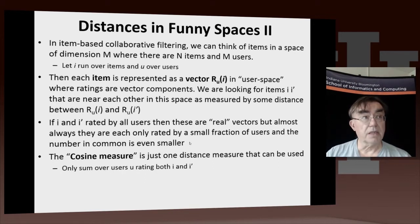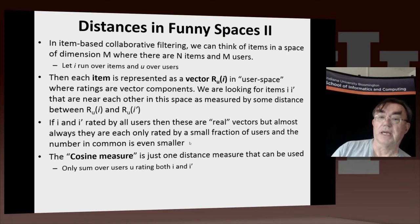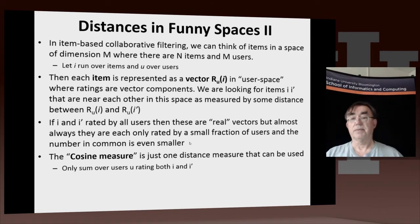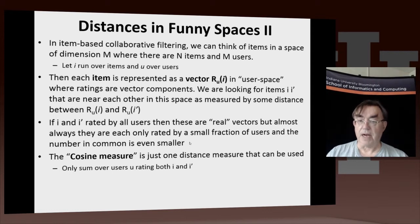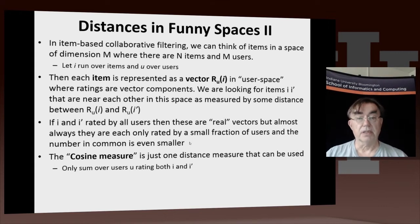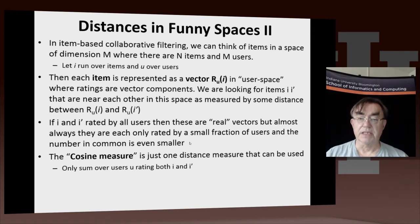You can look at this problem in an alternative way. This is the difference between user-based and item-based analyses. In the item-based approach, we think of the items as the points, and the space has dimension M when there are M users — this is sort of the dual of the previous way of looking at it. Every item is represented by a vector in user space, and the components of that vector are the ratings of each particular user, since every user is a dimension in that space.